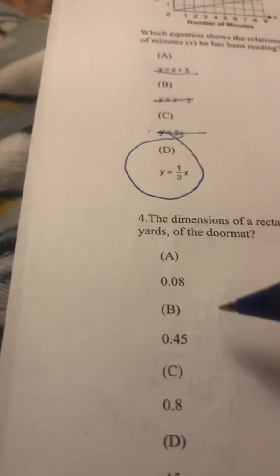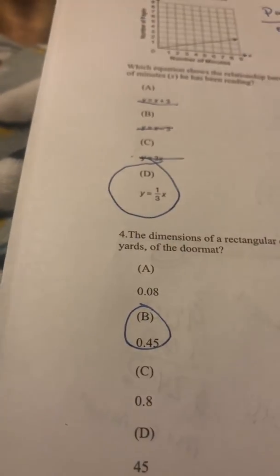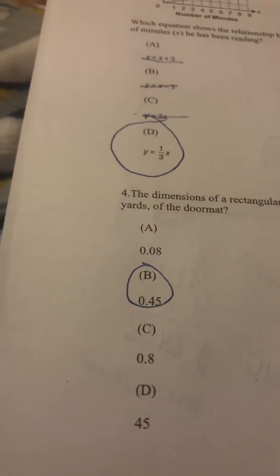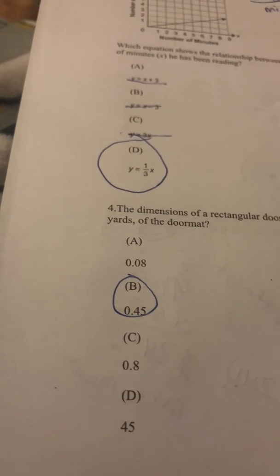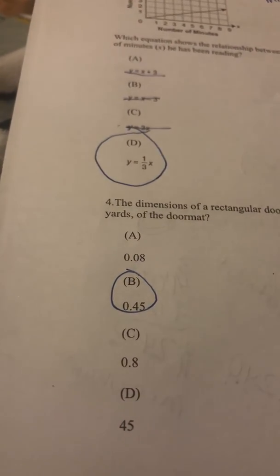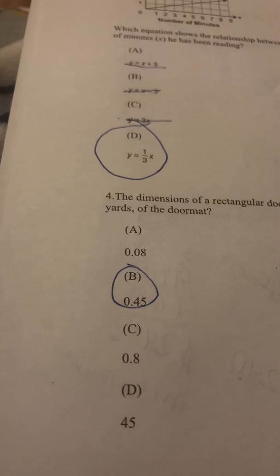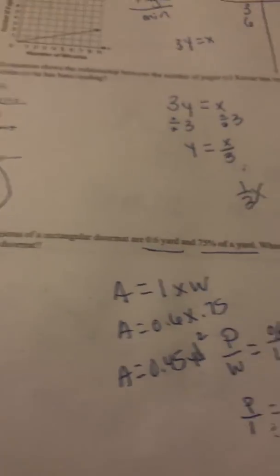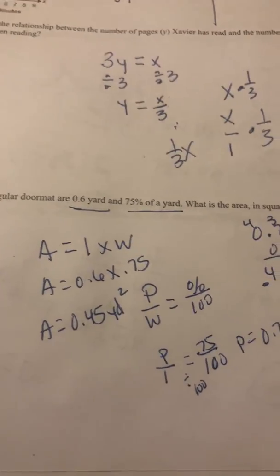Looky there, part B. Or choice B is our answer. So there we have it. 0.45 of a yard squared is the area of the doormat. There's some work. Hopefully that helps you.